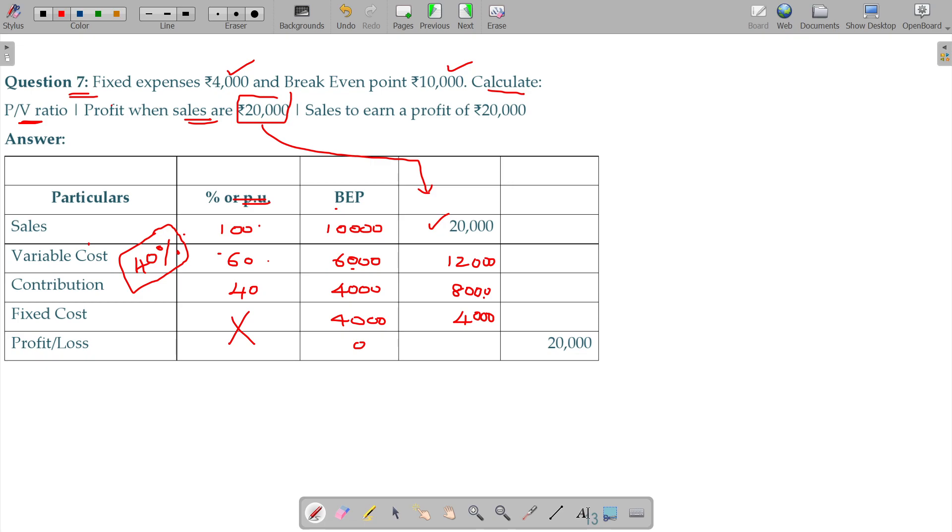Once you subtract the variable cost, you will get the contribution. From the contribution, fixed cost should be subtracted. BP and fixed cost subtracted profit.